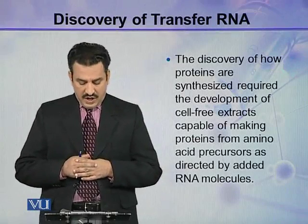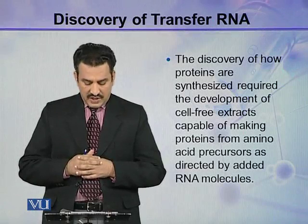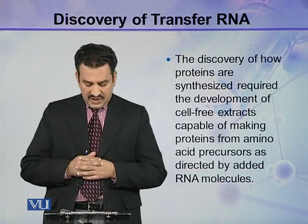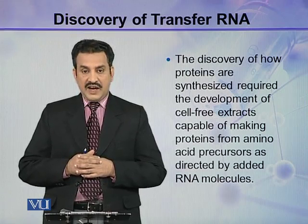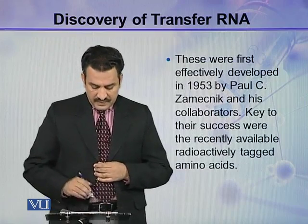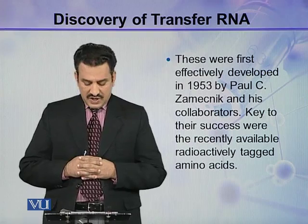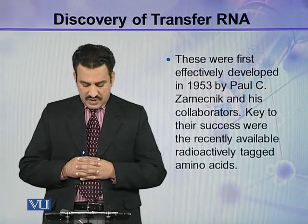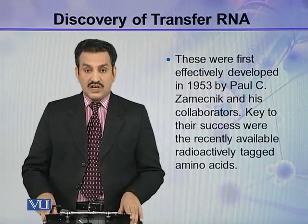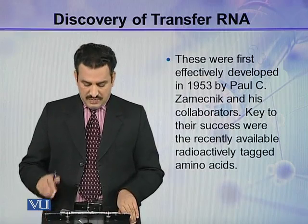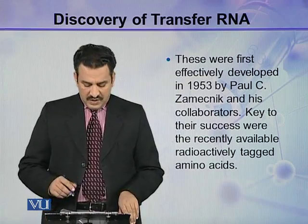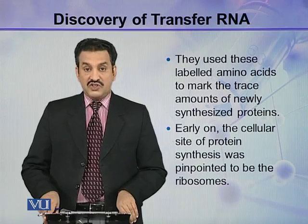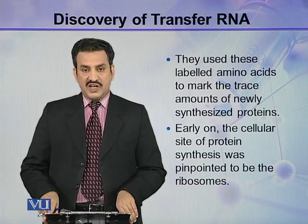The discovery of how proteins are synthesized required the development of cell-free extracts capable of making proteins from amino acid precursors as directed by added RNA molecules. These were first effectively developed in 1953 by Paul C. Zamecnik and his collaborators. Key to their success were the recently available radioactively tagged amino acids. They used these labeled amino acids to mark the trace amounts of newly synthesized proteins.